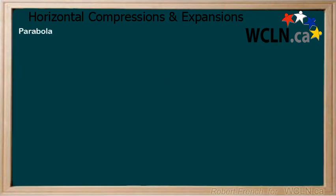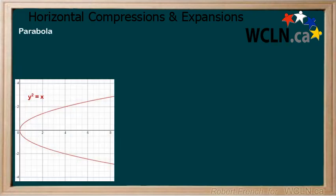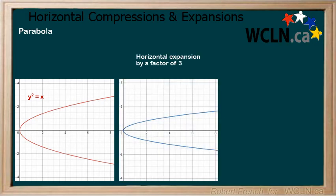Finally, we will look at a parabola. Here is both the equation and graph of a parabola. Now apply a horizontal expansion by a factor of 3. To do this, we multiply x by 1 over 3. We can see how the graph of the parabola changes as well.